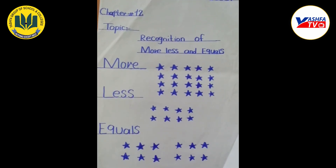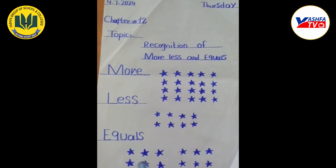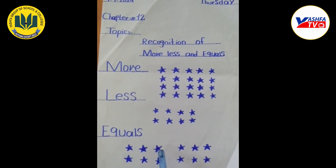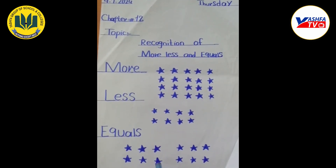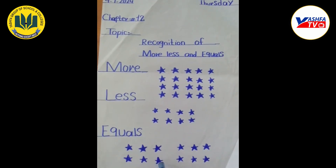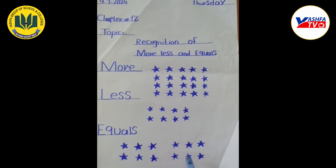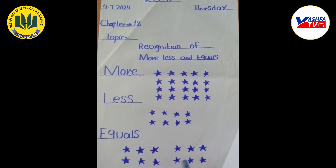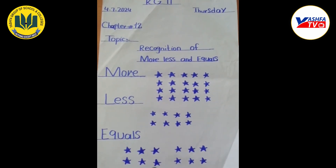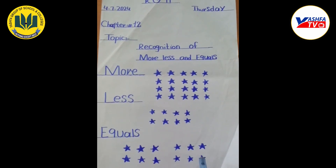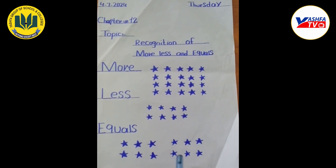اب last ہمارے پاس ہے equal۔ اب ہم دونوں sides والے stars count کرتے ہیں: 1, 2, 3, 4, 5, 6۔ کتنے stars ہوئے؟ 6۔ اب دوسری side: 1, 2, 3, 4, 5, 6۔ کتنے ہوئے؟ 6۔ دونوں sides والے stars ایک جیسے ہیں — ادھر بھی 6 ہیں، ادھر بھی 6 ہیں۔ تو یہ کیا ہوئے؟ Equal — تعداد میں برابر۔